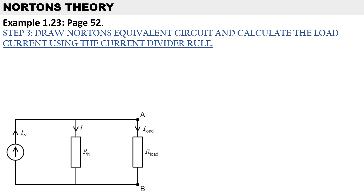The final step is to draw Norton's equivalent circuit and calculate the load current using the current divider rule. The circuit is simplified to one single current source and one resistor — Norton's current and Norton's resistance — and then we calculate the load current.